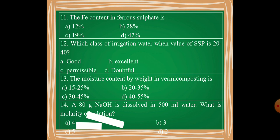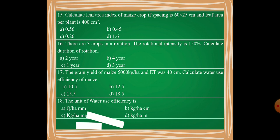Moving on, question number 15: Calculate leaf area index of maize crop if spacing is 60 into 25 cm and leaf area per plant is 400 cm square.